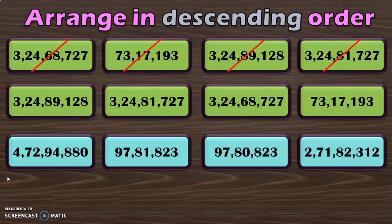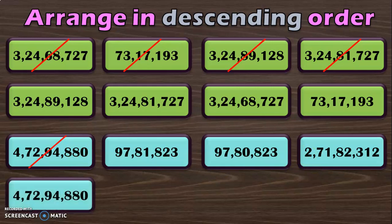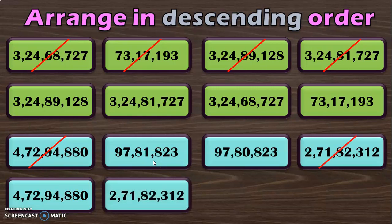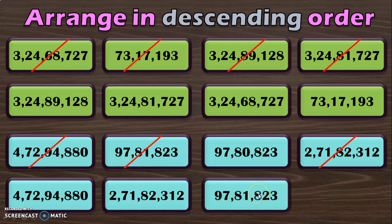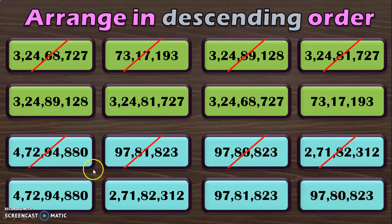Let us do one last example for descending order. You have two 8 digit numbers and two 7 digit numbers. Since we have to identify the largest number, look at the crore's place value in the 8 digit numbers. With that you can say 4 crore 72,94,880 is the biggest of all. The number smaller than that is 2 crore 71,82,312. The number smaller than this is 97,81,823, and the smallest of all is 97,80,823.